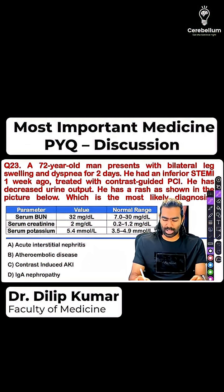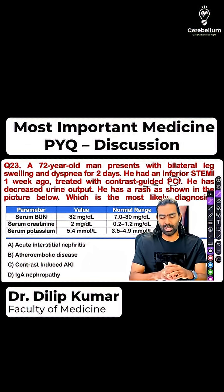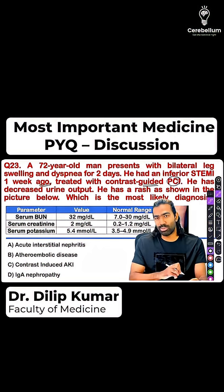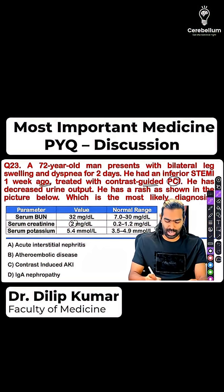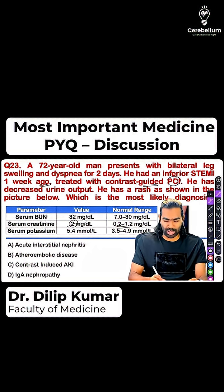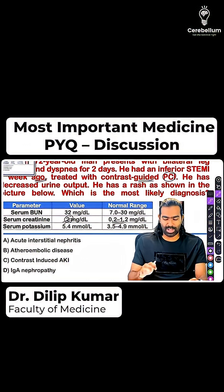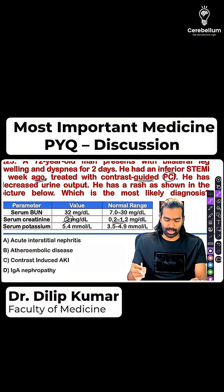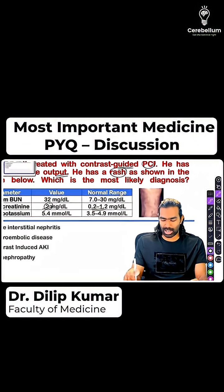The patient underwent a contrast-guided PCI one week ago and is now presenting with AKI. Creatinine is elevated at two milligrams per deciliter. There is AKI in context, and the patient is also having oliguria and a rash as shown.